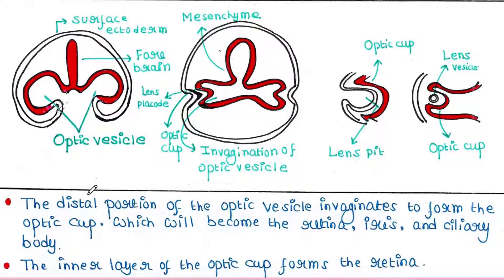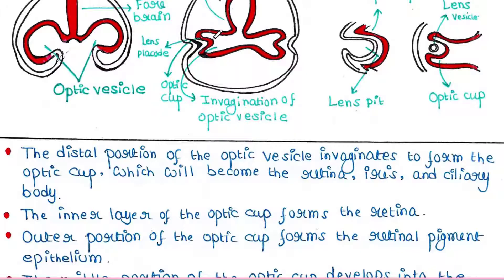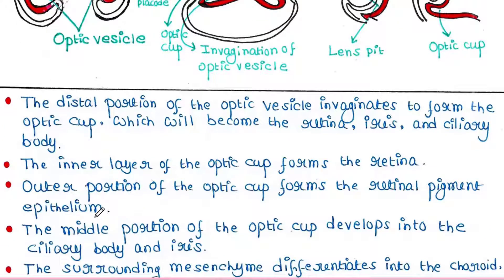Now the distal portion of the optic vesicle invaginates to form the optic cup. This optic cup will become the retina, iris and ciliary body. The optic cup has 3 parts: an inner layer, an outer layer, and a middle layer in between. The inner layer of the optic cup forms the retina. The outer layer of the optic cup forms the retinal pigment epithelium. And the middle layer of the optic cup develops into the ciliary body and iris.